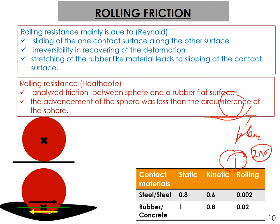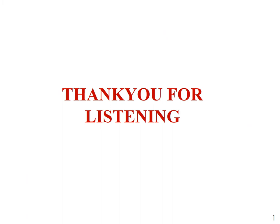Rolling bearings are one of the best examples of rolling pairs. We have many such examples. This is all about friction — I hope you have gained some understanding of friction. Thank you very much for listening.